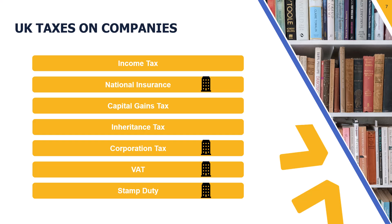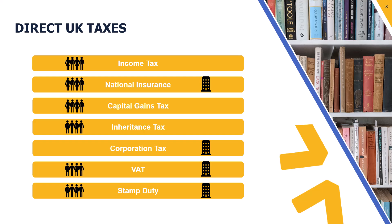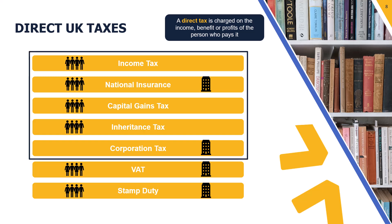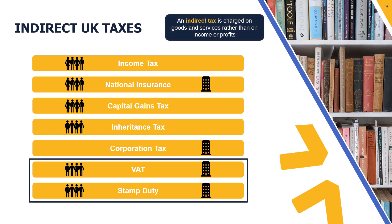As well as distinguishing between taxes paid by individuals and companies, I want to point out the difference between direct taxes and indirect taxes. A direct tax is charged on income, benefit, or profits, and the person whose liability it is also pays that tax to HMRC. Within the UK, the direct taxes are income tax, national insurance, capital gains tax, inheritance tax, and corporation tax. By contrast, indirect taxes — VAT and stamp duty — are charged on goods and services rather than income and profits. For example, VAT is charged on turnover rather than profits, making it an indirect tax.